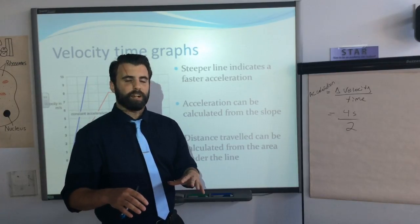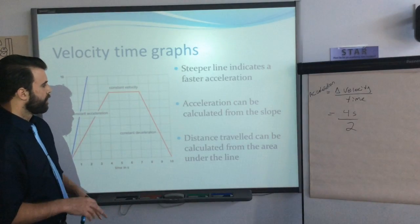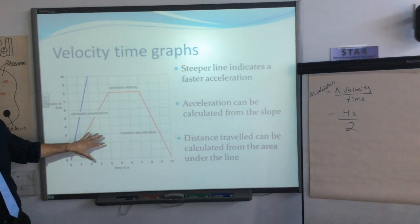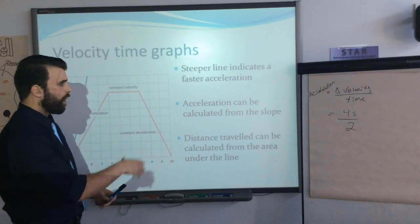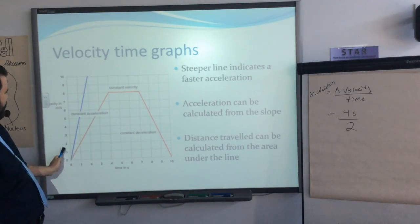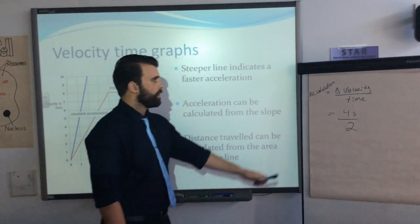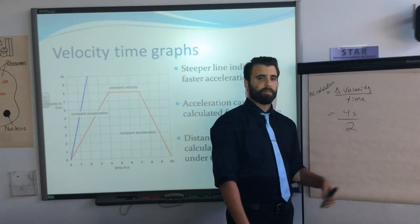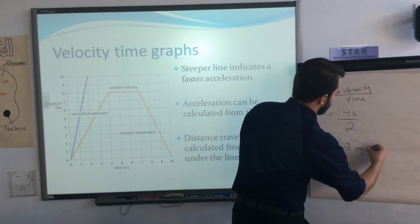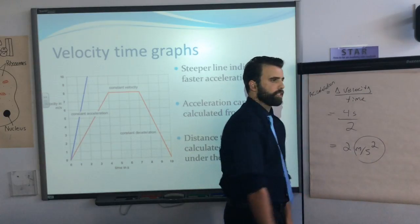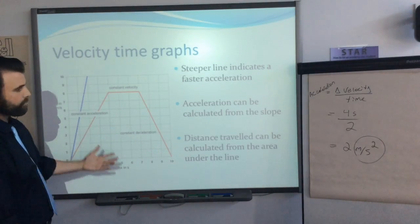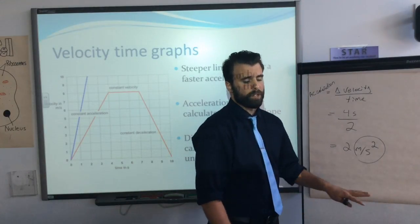After some technical difficulties, I'll backtrack. I was getting into how we can calculate acceleration from a velocity-time graph by finding the slope. I picked a point at two seconds where the velocity was four meters per second. The change in velocity was four, divided by two seconds, giving an acceleration of two meters per second squared — that's the unit for acceleration.